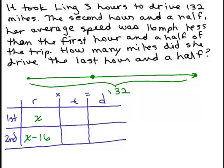What about the time on the first half? Well, that's the first hour and a half. She goes an hour and a half on the first part of the trip and another hour and a half on the second part of the trip. So the distance, we multiply the rate times time. So we have x times 1.5, which is 1.5x, and we've got the second half of the trip x minus 16 times 1.5. So that's really 1.5 times (x minus 16).